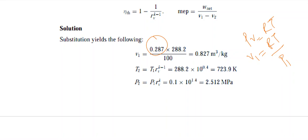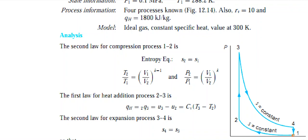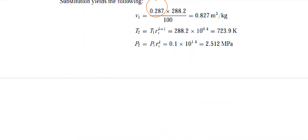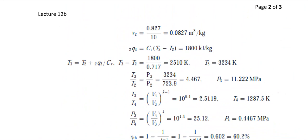For State 2 — adiabatic compression — using T2/T1 = (V1/V2)^(γ-1): T1 = 288.2 K, V1/V2 = compression ratio = 10, γ = 1.4. We can find T2. For pressure P2, using P2/P1 = (V1/V2)^γ with P1 = 0.1 MPa, V1/V2 = 10, γ = 1.4, we get P2 = 2.514 MPa. V2 = V1/10.